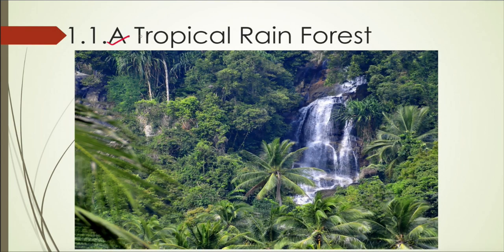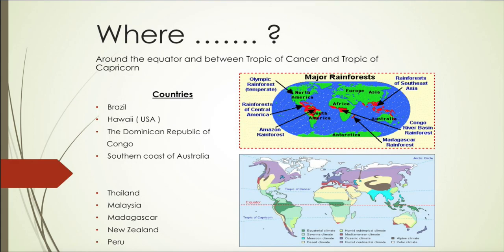The first one is tropical rainforest. As the name suggests, these forests have a lot of rainfall. They are mainly found around the Tropic of Cancer and Capricorn — essentially between those regions near the equator. So they are your tropical, evergreen, or rainforest type.